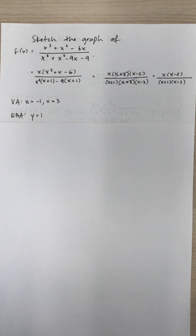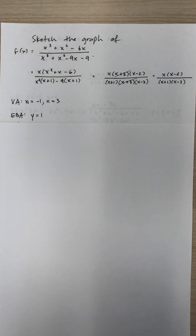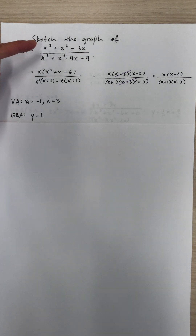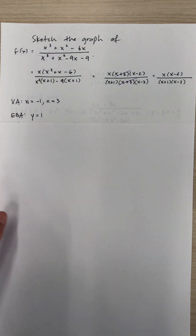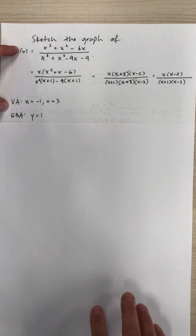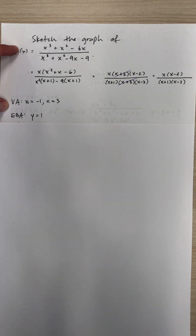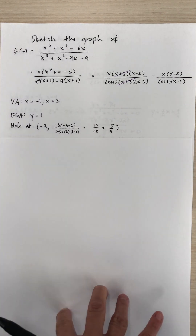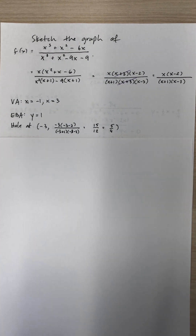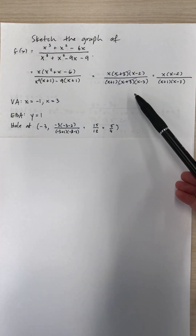For the end behavior, because the degree of the numerator is 3 and the degree of the denominator is 3, we have a horizontal asymptote. Its equation is the coefficient of x cubed in the numerator divided by the coefficient of x cubed in the denominator, which is just 1. So y equals 1 is our horizontal asymptote. We also have a hole at x equals negative 3 because those two factors cancel.